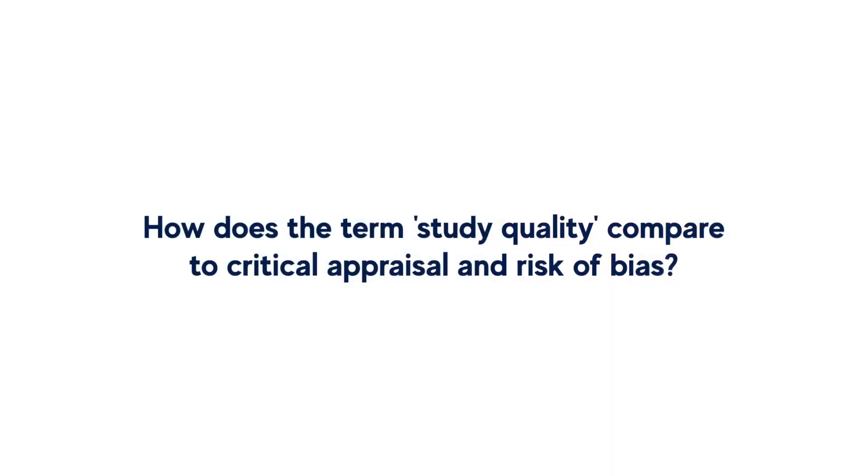Risk of bias specifically looks at the potential for bias in the results of included studies. This might be due to study design features, such as a lack of randomization or blinding, or it may occur during the conduct of the study or during the analysis of the results. When we talk about bias, we're really talking about systematic error — whether the result observed in a study is different to what is true.